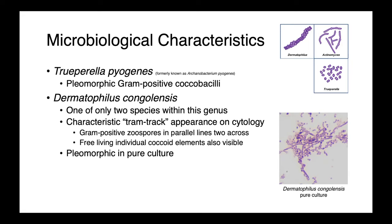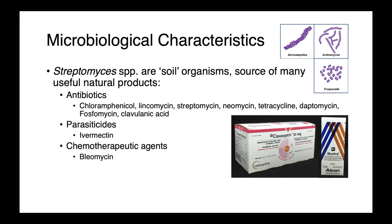In pure culture, Dermatophilus congolensis is pleomorphic, with both free-living zoospores and longer elements. Streptomyces species also fall within the Actinomycetales. These are soil organisms, and over the decades have been a source of many useful natural products, including antibiotics: chloramphenicol, lincomycin, streptomycin, neomycin, tetracycline, daptomycin, phosphomycin, and clavulanic acid; the antiparasitic ivermectin; and even chemotherapeutic drugs like bleomycin.